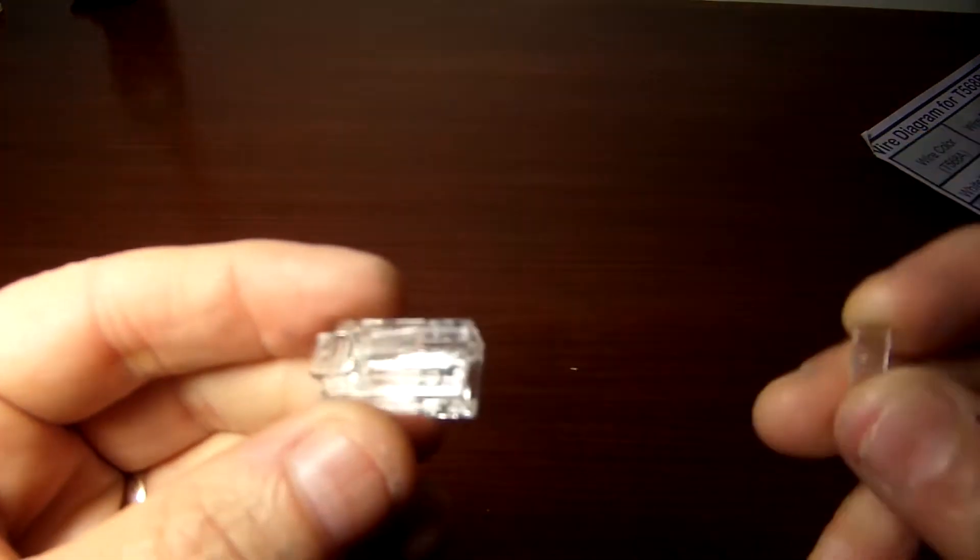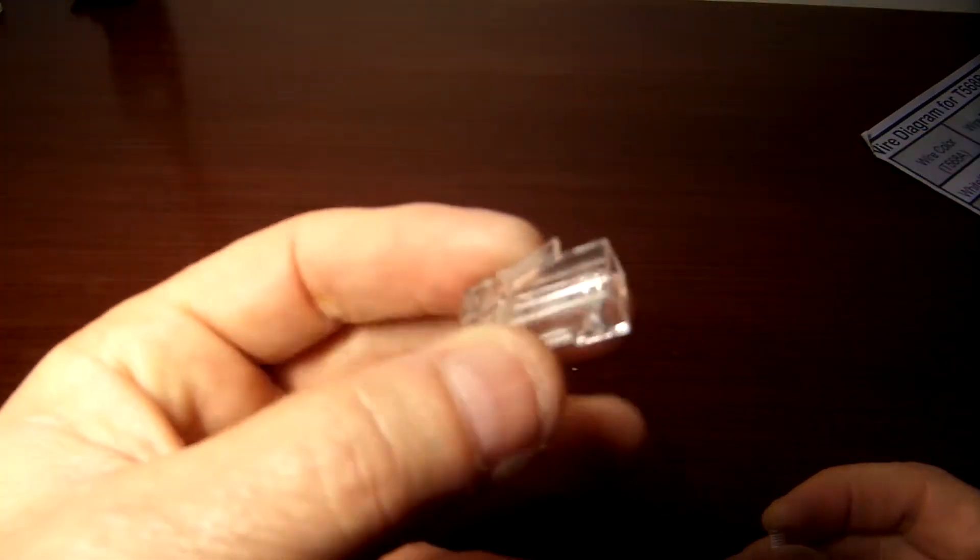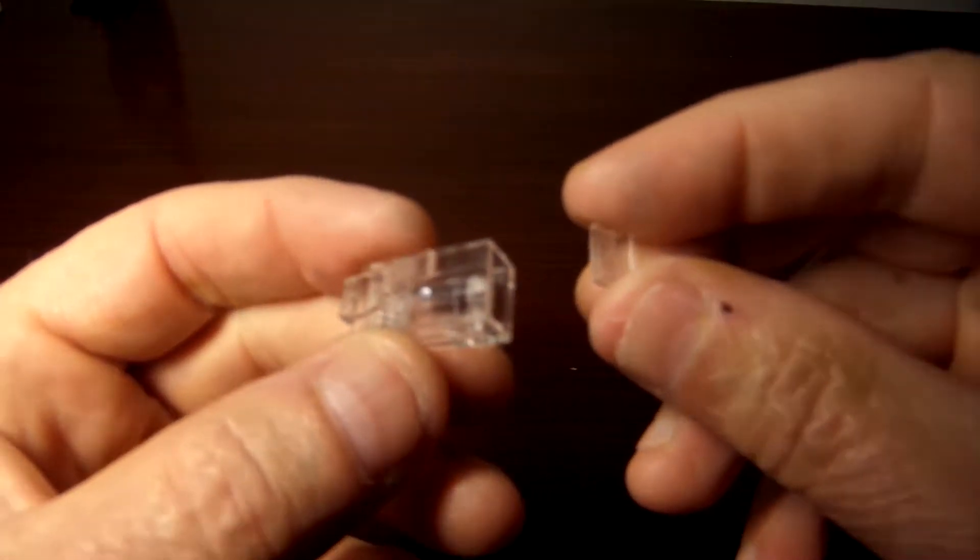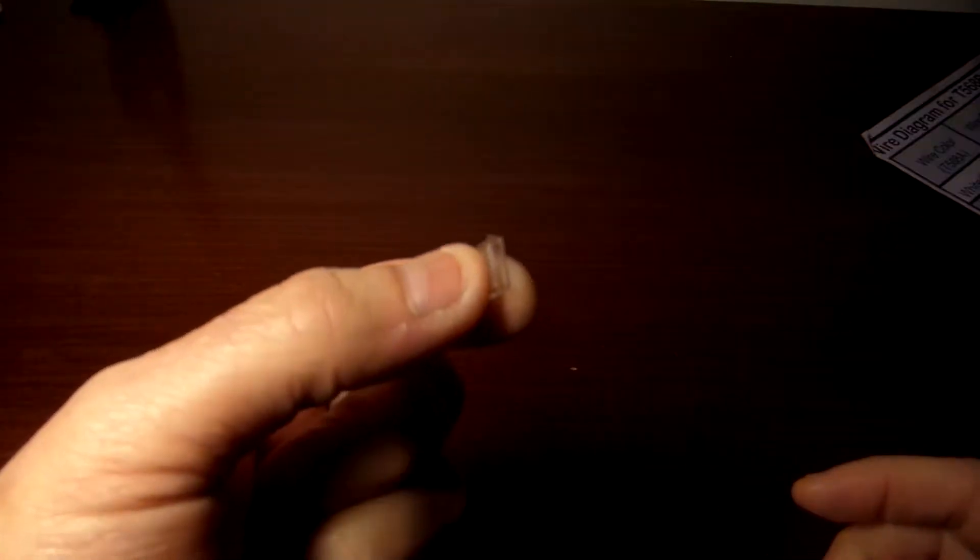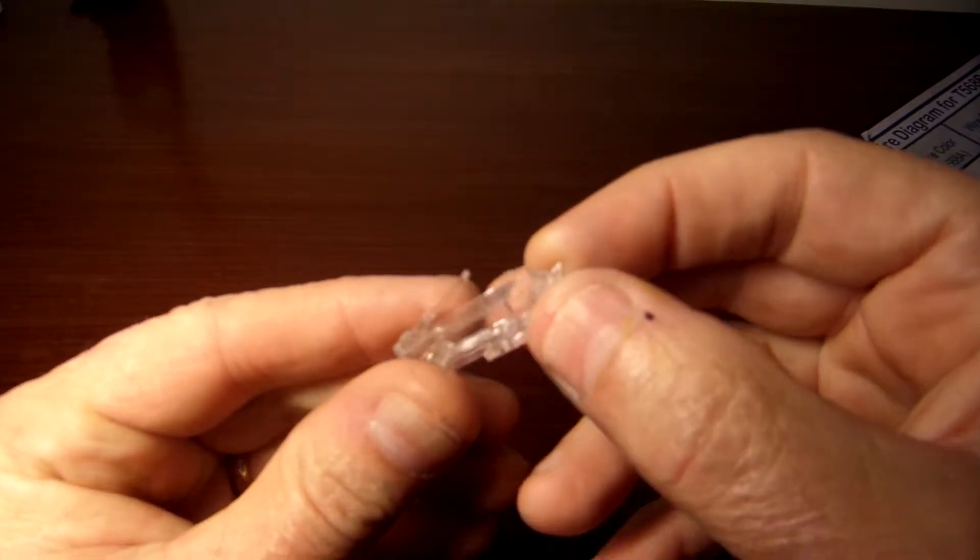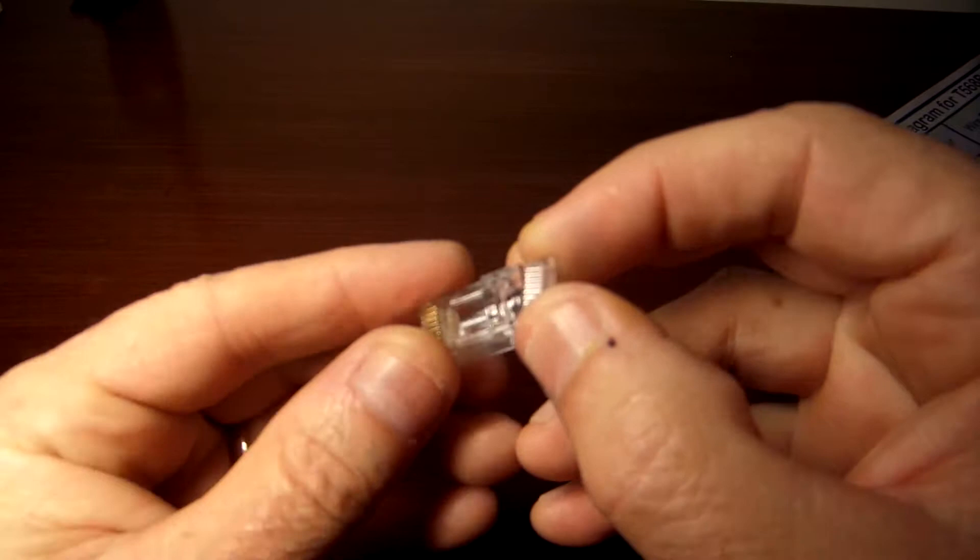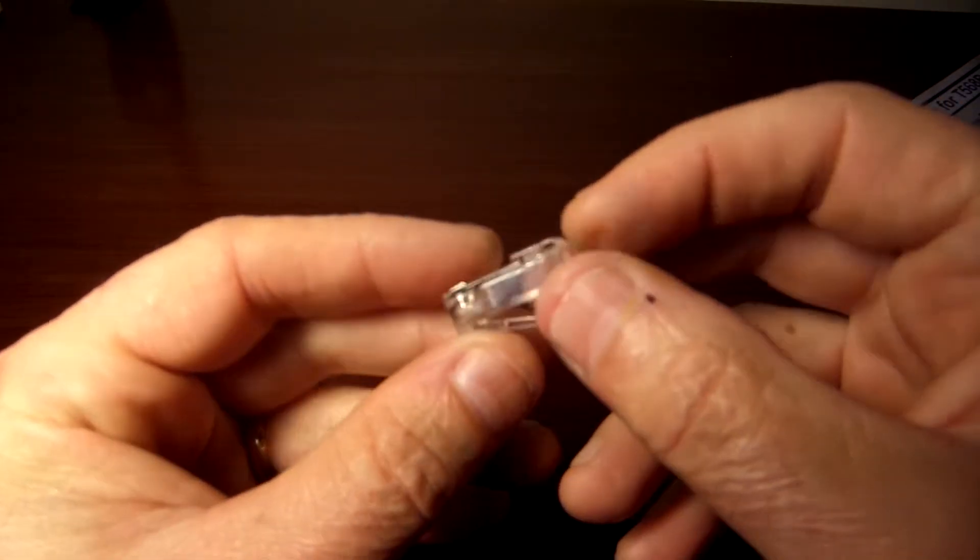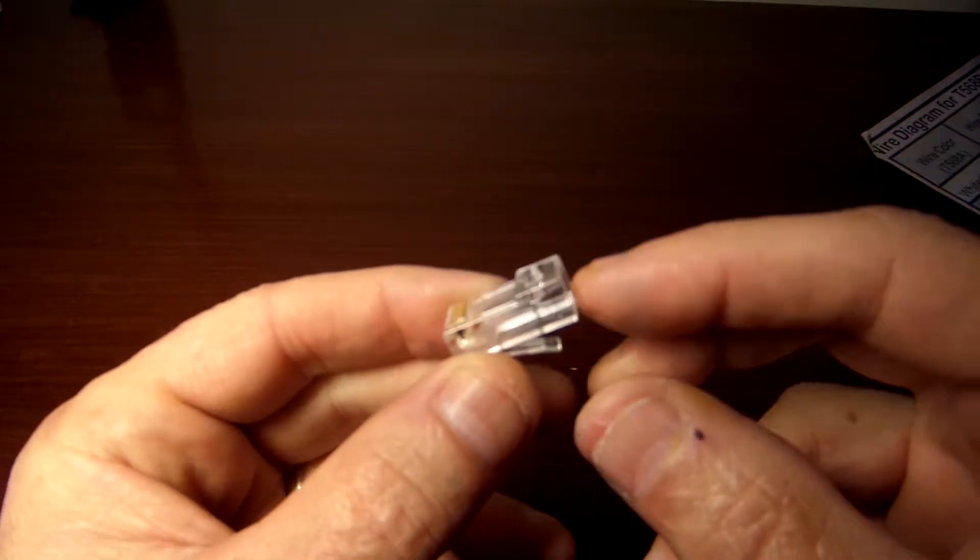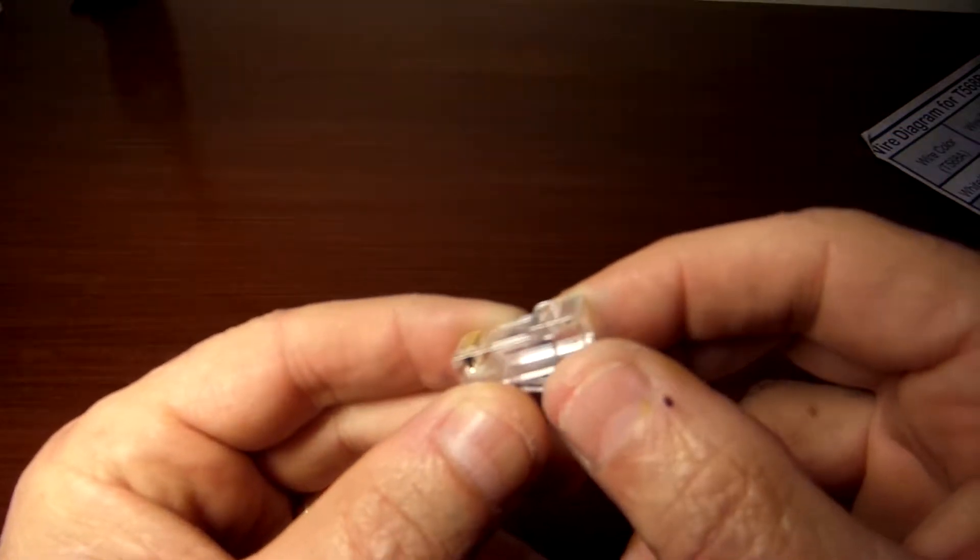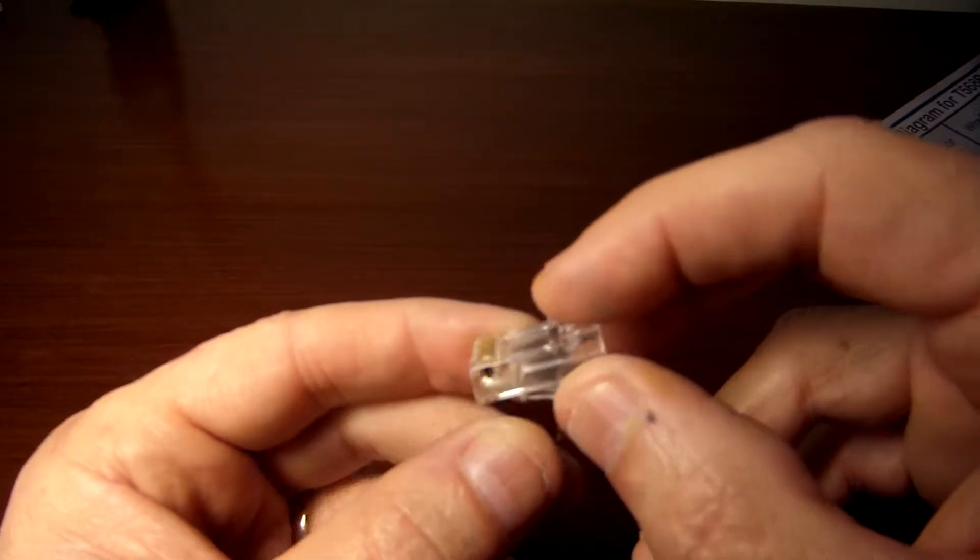You also need some Cat5e crimp connectors. These come with a load sled so you can preload your wires in there and make sure you have them in the proper orientation, and then this will slide in. That way you can pre-measure your wires and make sure you have the proper length so that you get crimp on the casing.